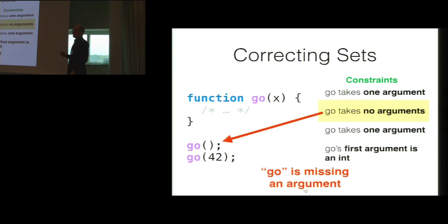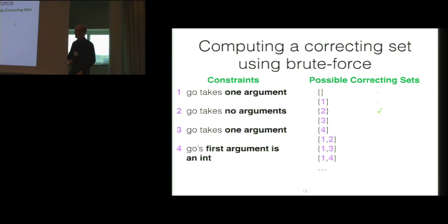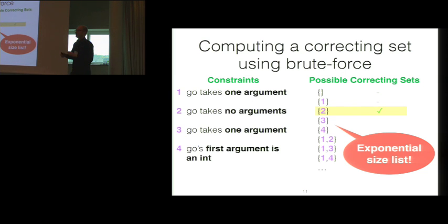And correcting sets aren't anything magical. They're actually not hard to compute. Here is a silly algorithm for doing it. You can use brute force search. Here are all of the constraints. All you have to do is enumerate all of the possible correcting sets. There they are. I've omitted some because there's a lot of them. And then you send off the constraints minus each correcting set to the type solver and see if it is indeed a true correcting set. And if you do that, you find that the set consisting of just constraint 2 is a correcting set. It's the smallest possible one because you enumerated them in order of size, and everything is wonderful. So you found the correcting set. The problem is that this is an exponential size list. There are 2 to the n possible subsets for n constraints, and we'd really like to avoid this kind of trouble.